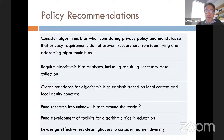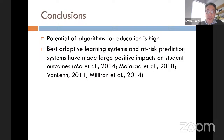Redesign effectiveness clearinghouses to consider learner diversity. All of this is in our article in much greater detail. To conclude: the potential of algorithms for education is high, and the best adaptive learning systems and at-risk prediction systems have made large positive impacts on student outcomes.